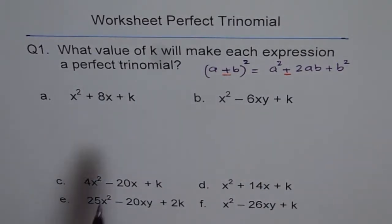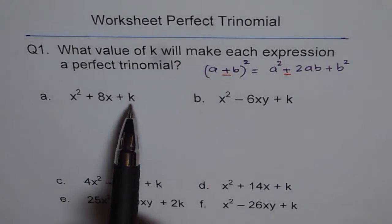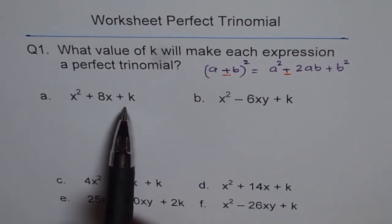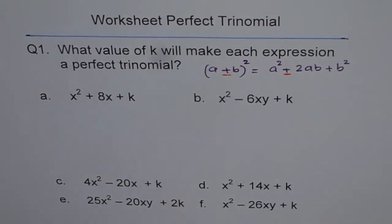Finding the value of k means finding a value which, when substituted, allows the expression to be factored as (a + b)² or (a − b)². There are six questions; I will do two of them and the rest you should try on your own. If you have difficulties, write your comments and I will answer them.